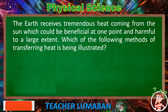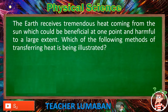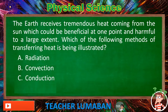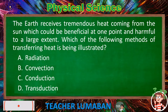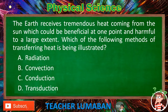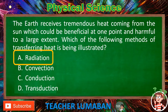The earth receives tremendous heat coming from the sun, which could be beneficial at one point and harmful to a large extent. Which of the following methods of transferring heat is being illustrated? Letter A: radiation. Letter B: conduction. Letter C: convection. Letter D: transduction. The correct answer is Letter A, radiation. The method of transferring heat that is being illustrated is radiation.